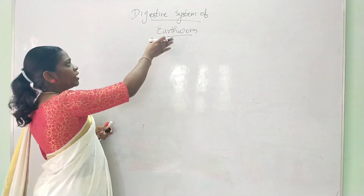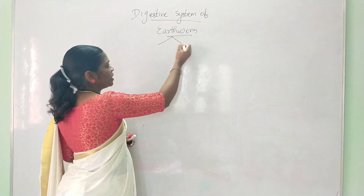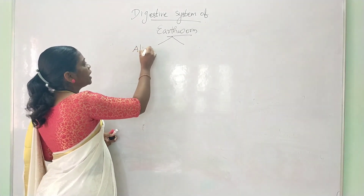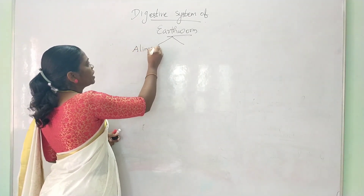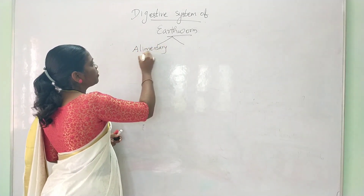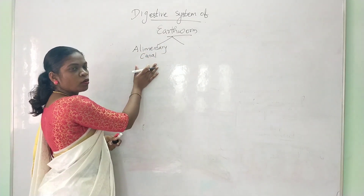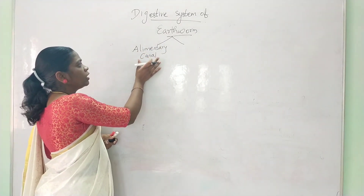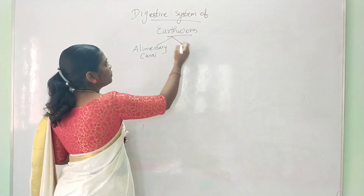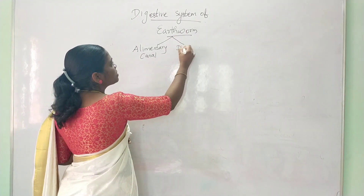The digestive system of the earthworm has two important structures. One structure is the alimentary canal, which includes all the digestive structures.